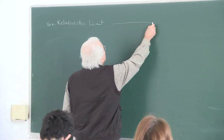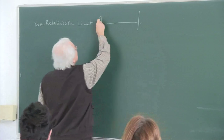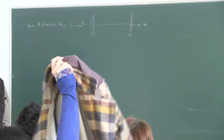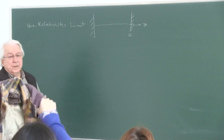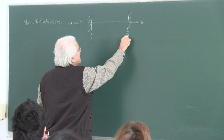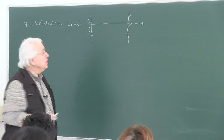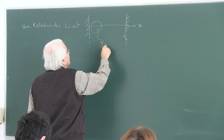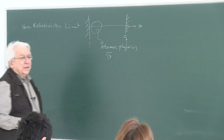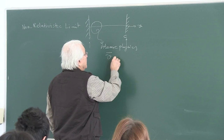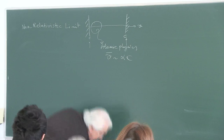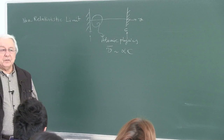Now we are going to discuss the non-relativistic limit associated with the atomic physics setting. On the v-axis, c is the speed of light — the upper limit of all signals — and zero is the lowest value for speed. The extreme non-relativistic limit is at rest, the extreme relativistic limit is the photon, and the atomic physics region lies between them. We know that the average speed of electrons in atoms is alpha times c — a really nice relationship that will help clarify several issues.